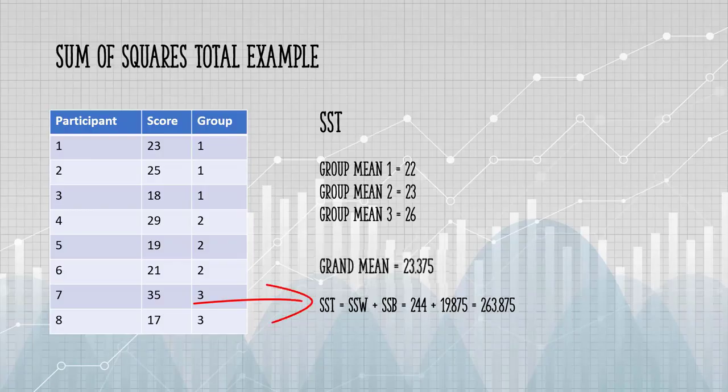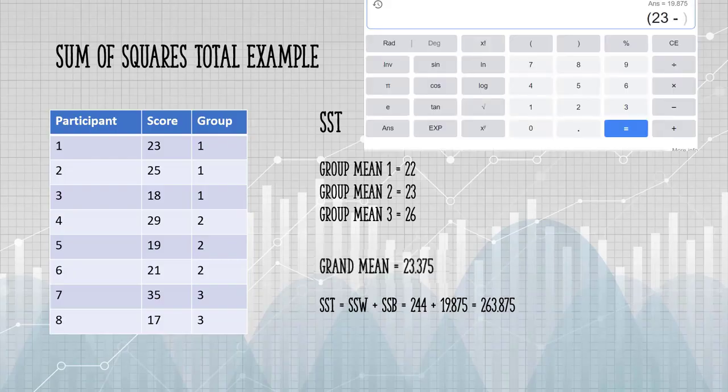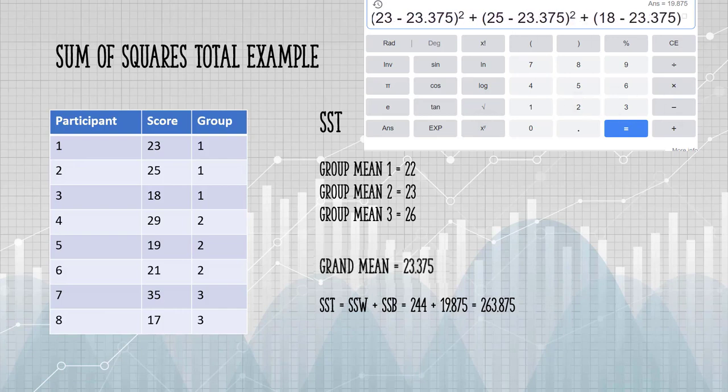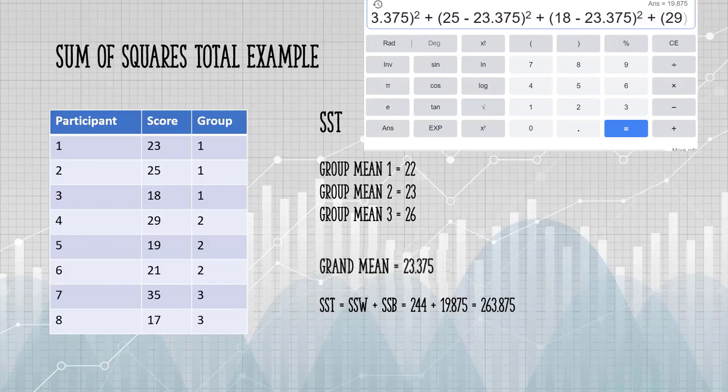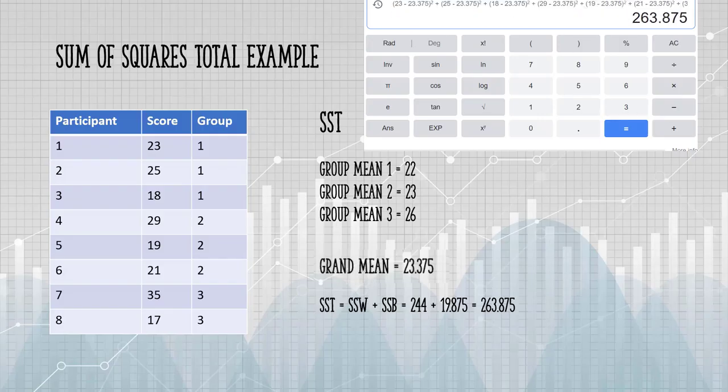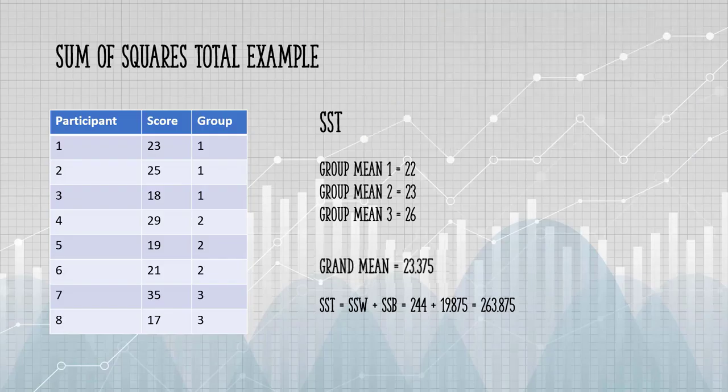If you have not calculated SSB and SSW, then the way you find the sum of squares total is the way we did before with that simple example. For each subject, find the difference between each score and the grand mean, square those differences, and then add all of them up. Our SST for this data set is 263.875.